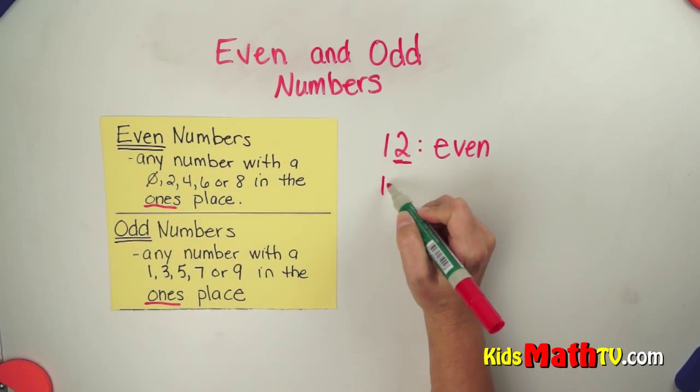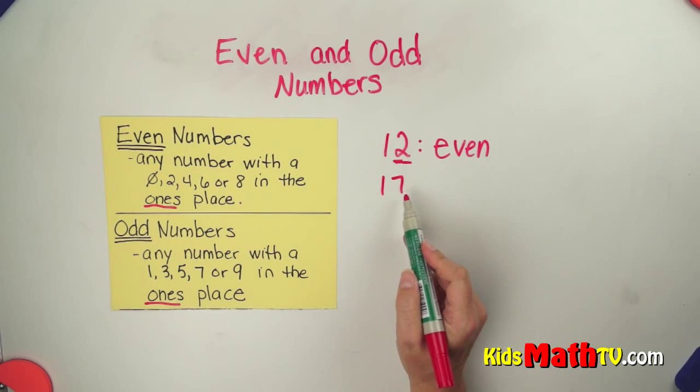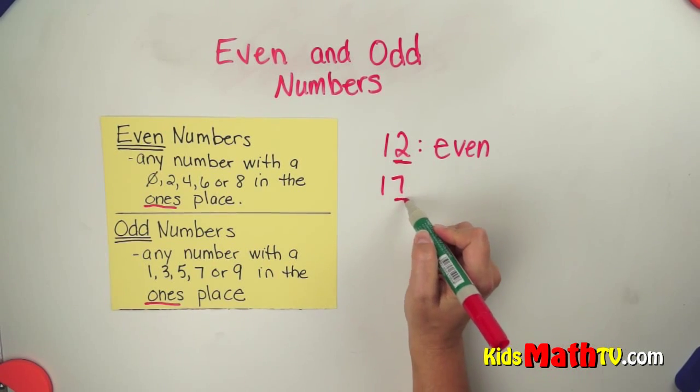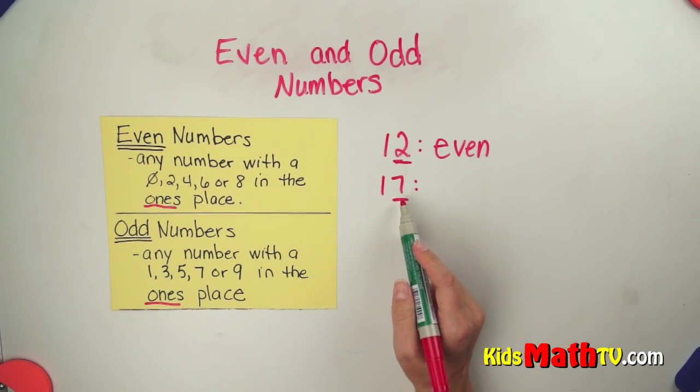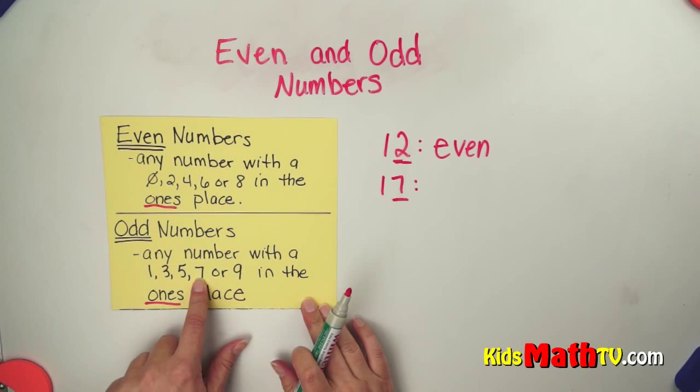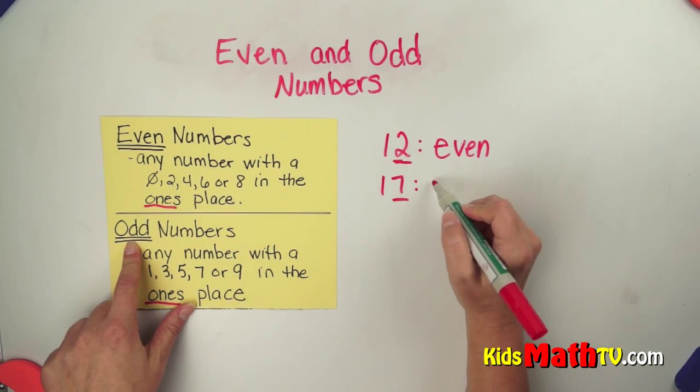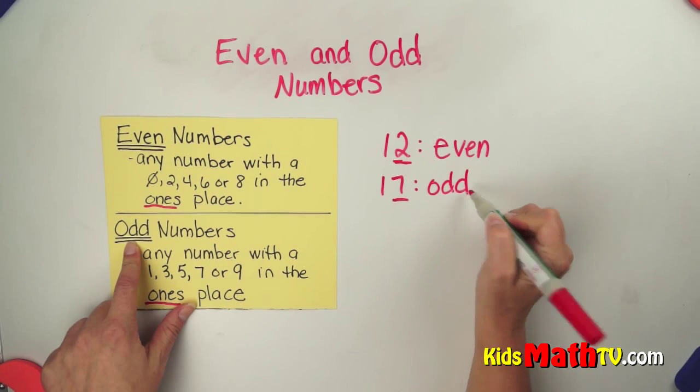Another problem. How about 17? Again, we are not worried about the tens place. We are just looking at the ones place. And in the ones place is a 7. That 7 is on this list of the odd numbers, so this is an odd number.